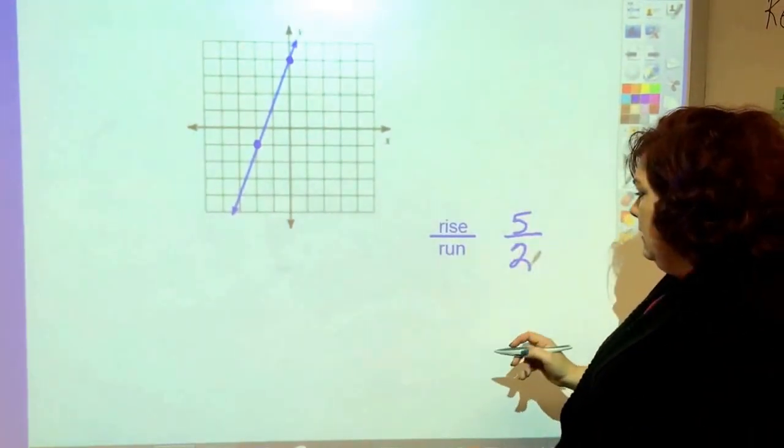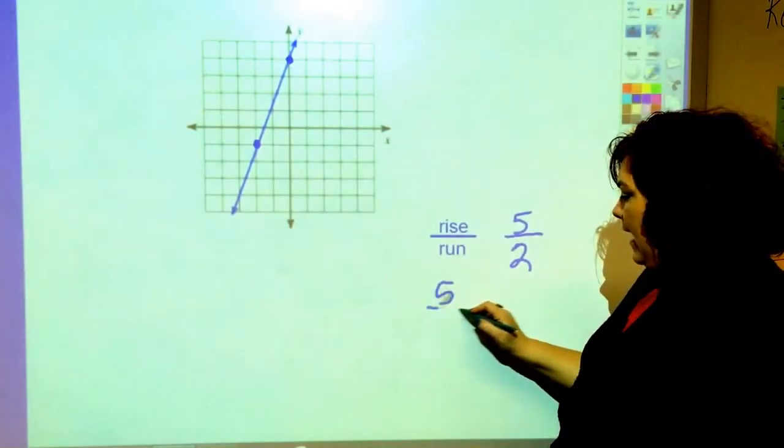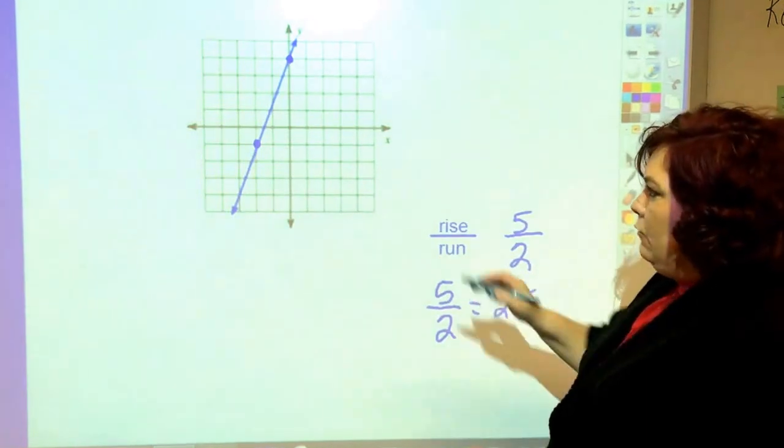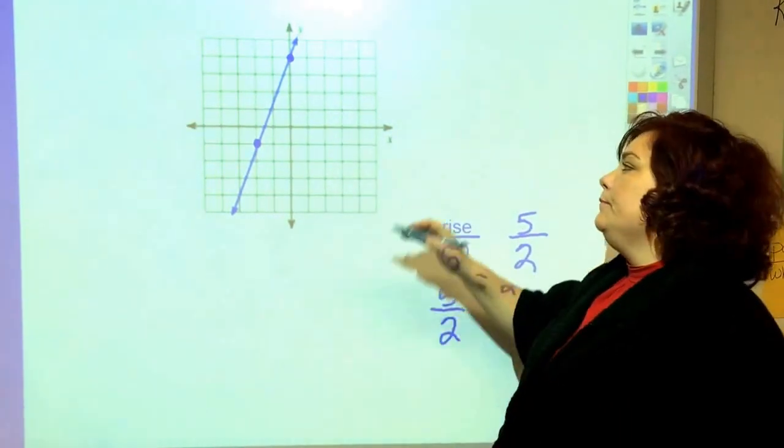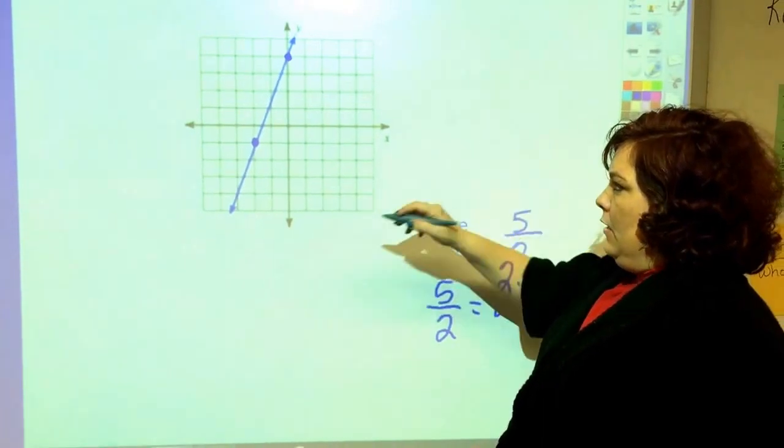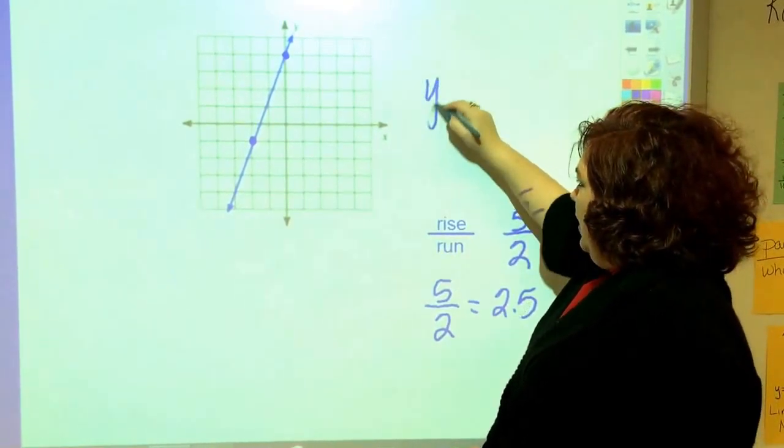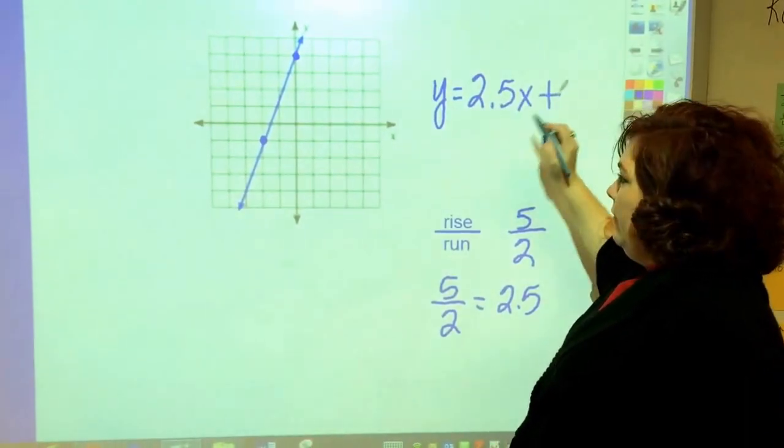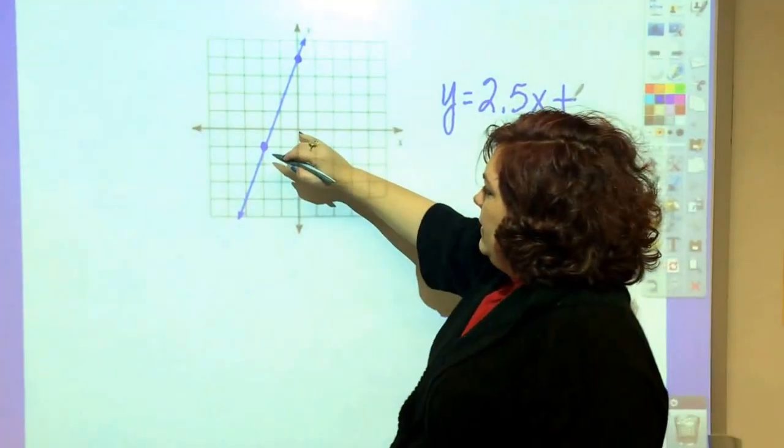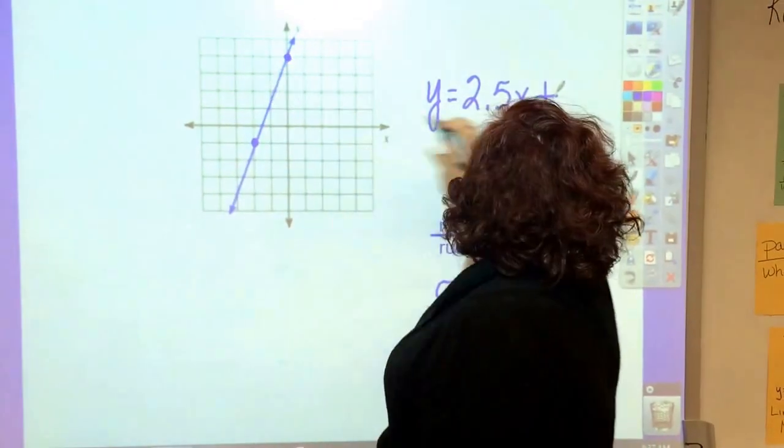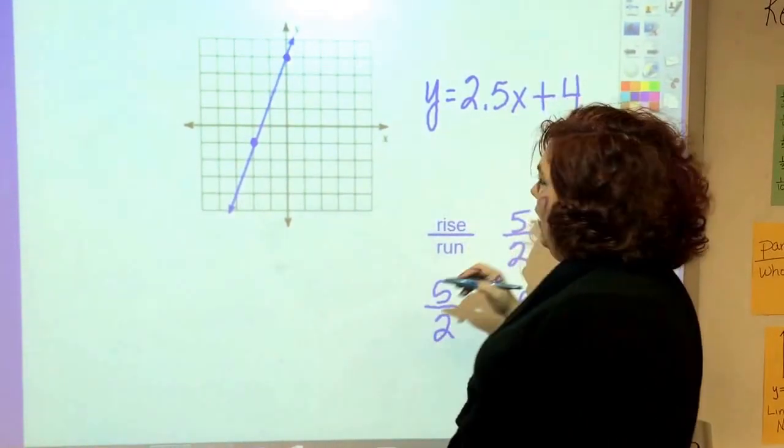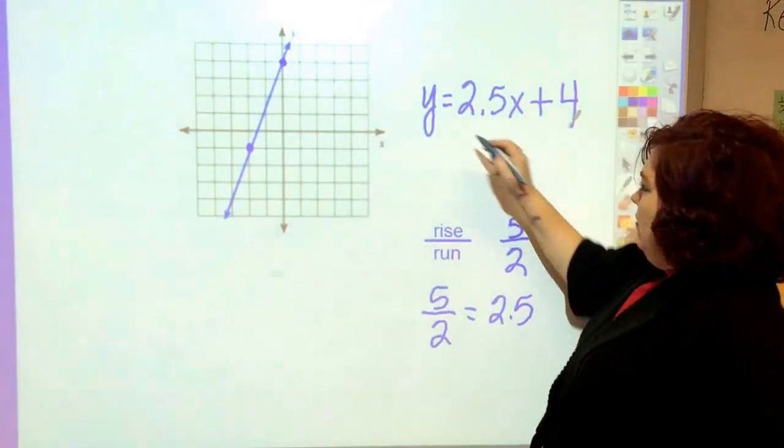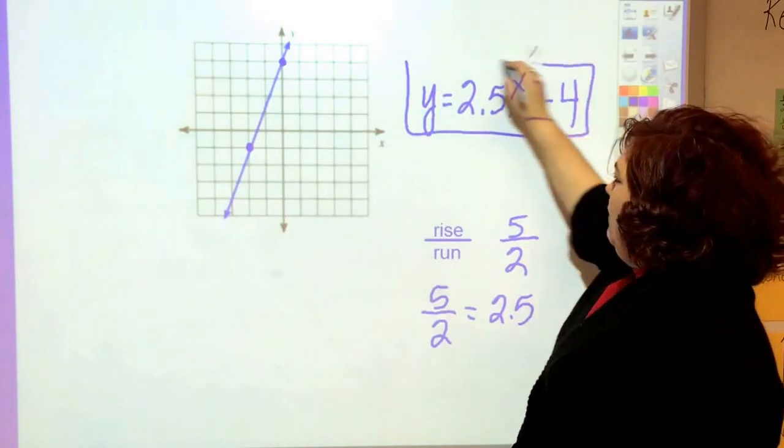So my slope is 5 halves or 2.5. And so I could write this – the equation of the line is y equals 2.5x and it's got to be plus the y intercept which is 1, 2, 3, 4 plus 4 where the line crosses the y axis. So that is the equation of my line.